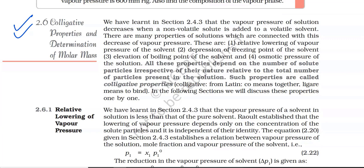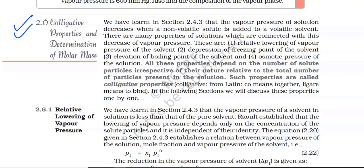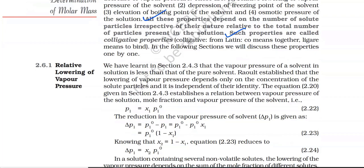2.6 Colligative Properties and Determination of Molar Mass. The vapour pressure of a solution decreases when a non-volatile solute is added to a volatile solvent. Many properties of solutions are connected with this decrease. These are: (1) relative lowering of vapour pressure of the solvent, (2) depression of freezing point of the solvent, (3) elevation of boiling point of the solvent, and (4) osmotic pressure of the solution. All these properties depend on the number of solute particles, irrespective of their nature, relative to the total number of particles present in the solution. Such properties are called colligative properties.